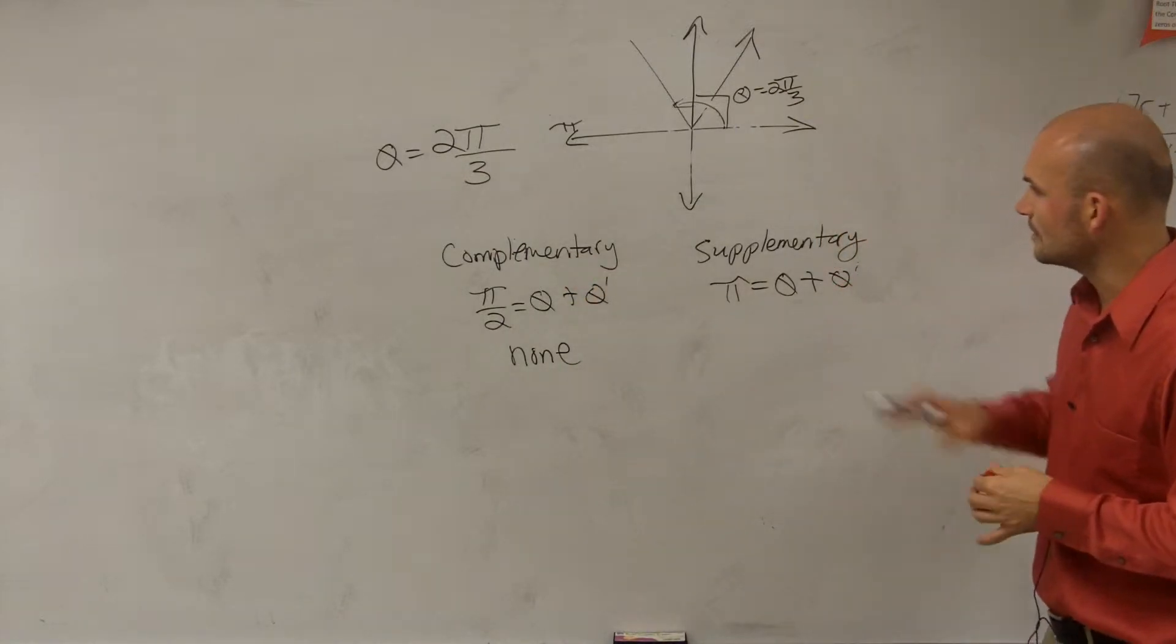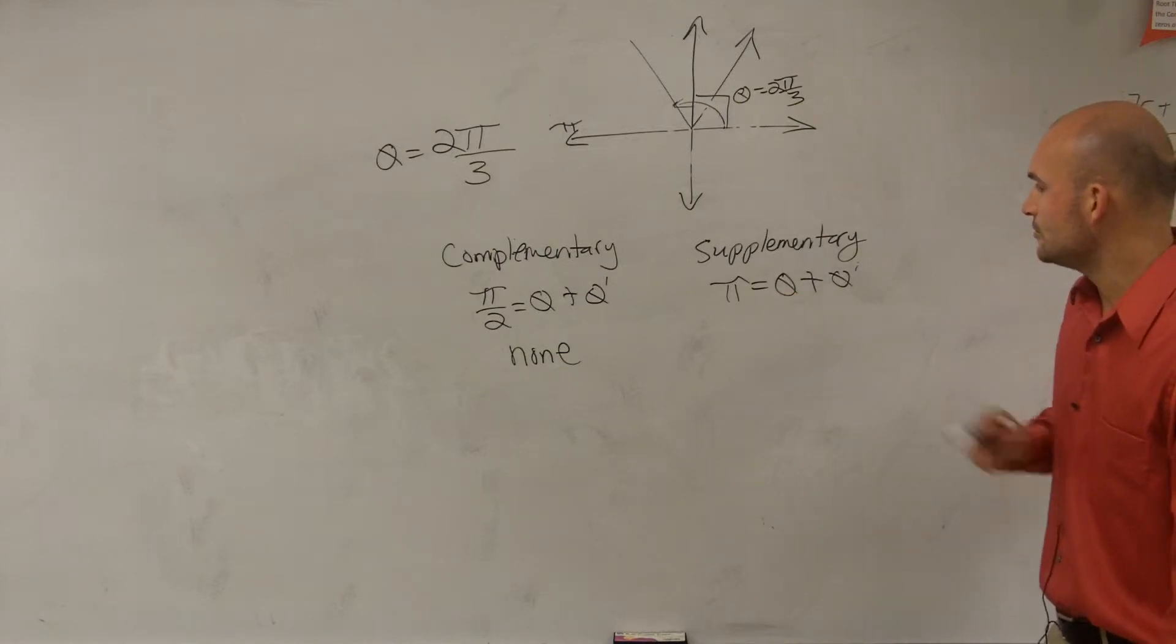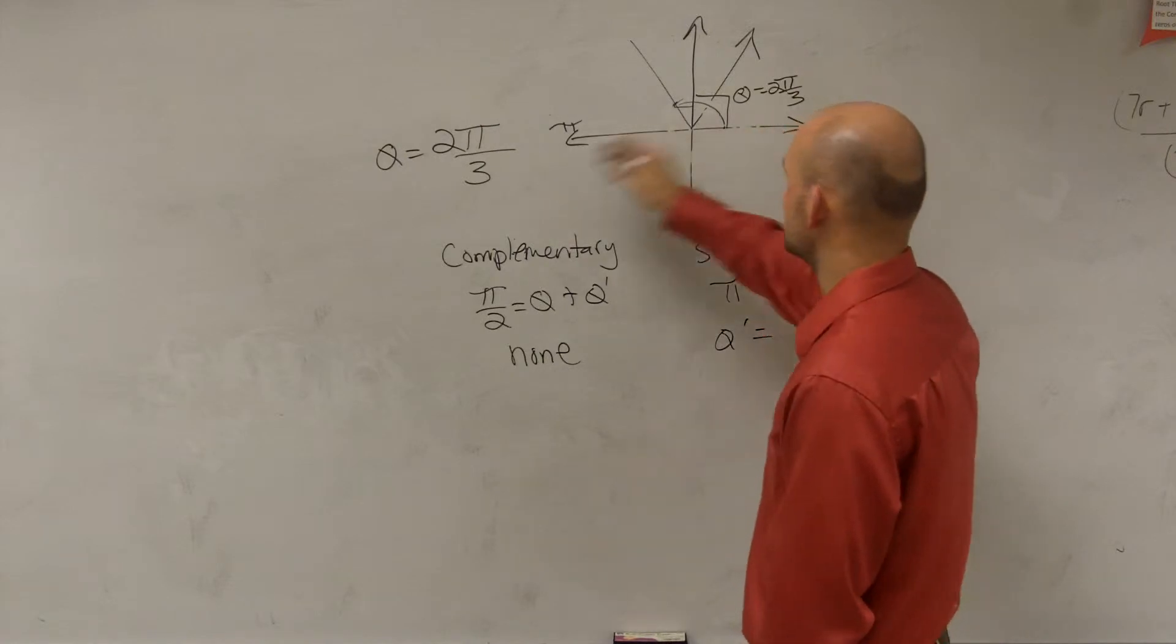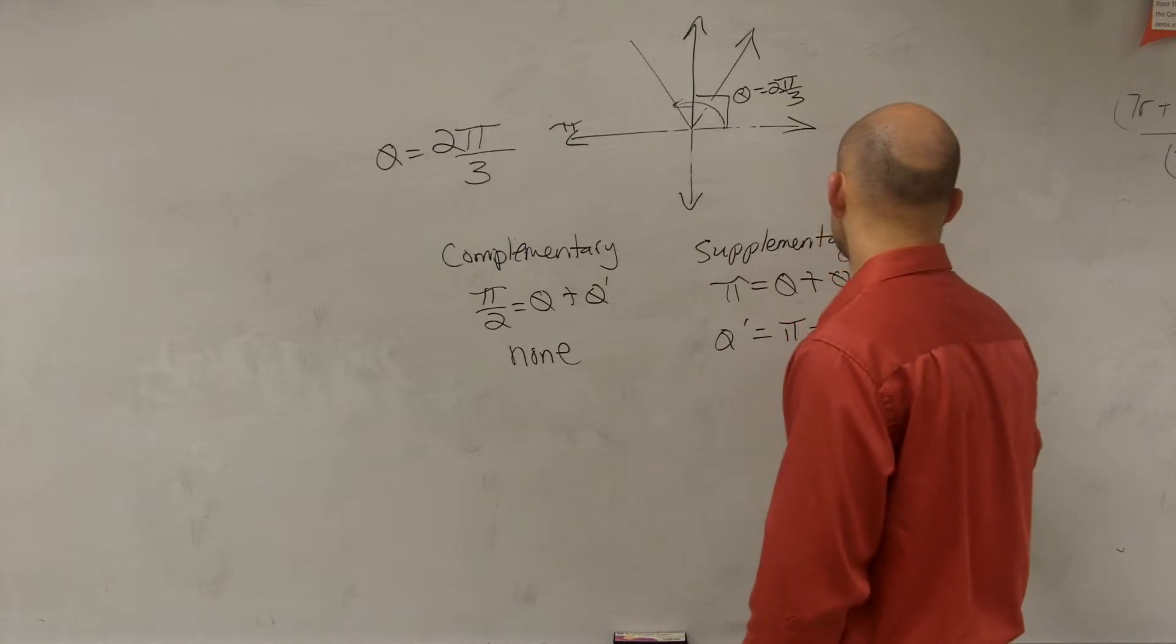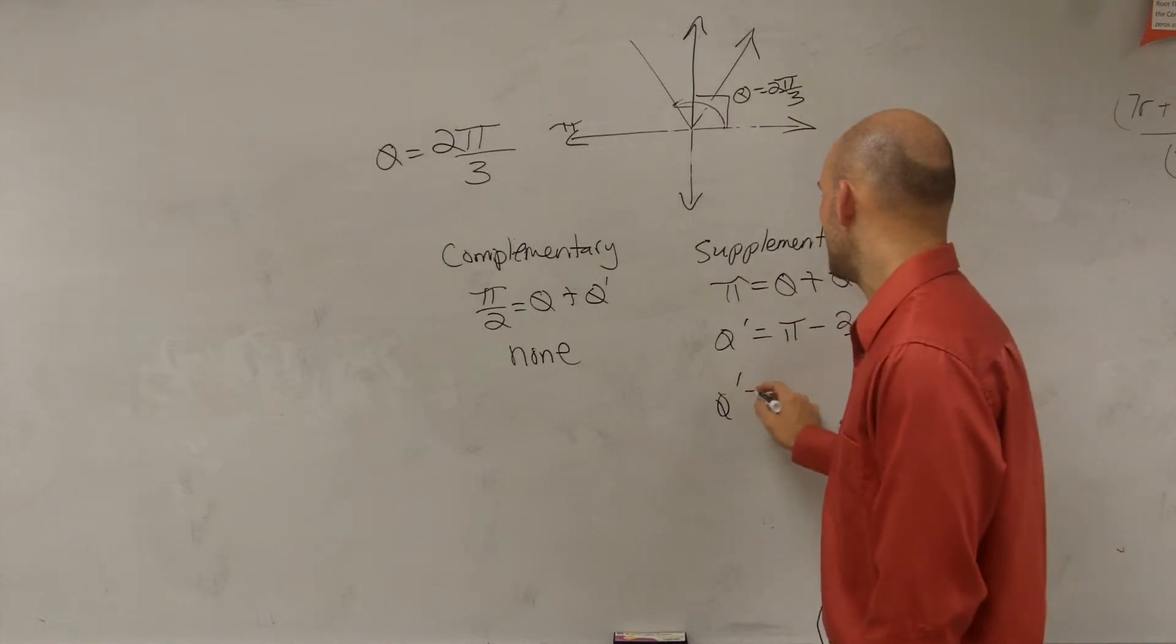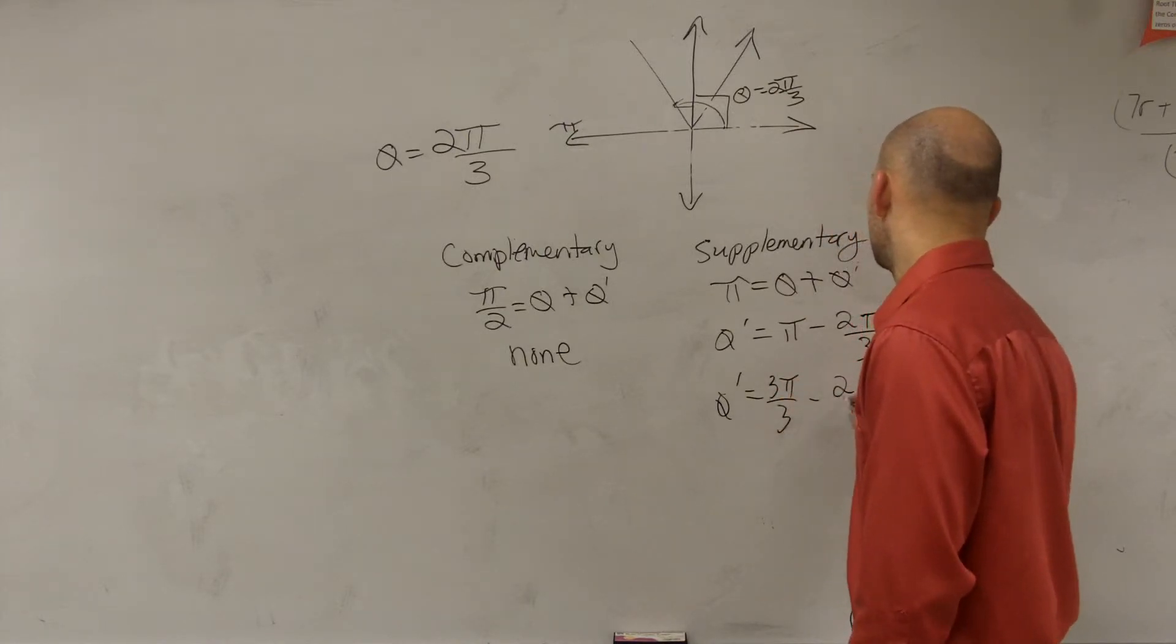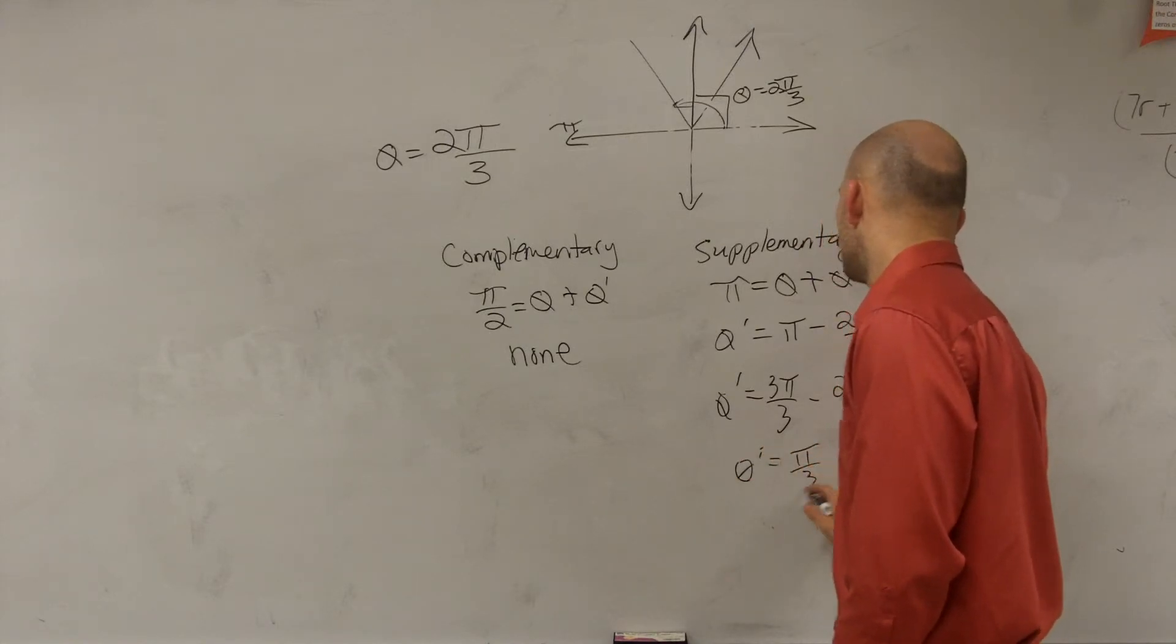So then we'll go and deal with supplementary. Remember, supplementary is π equals theta minus theta prime. So we could say theta prime equals, and I'll say theta is 2π over 3, so equals π minus 2π over 3. Get common denominators. Theta prime equals 3π over 3 minus 2π over 3, and you could say theta prime equals π over 3.